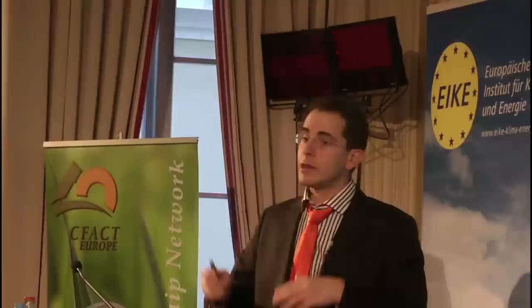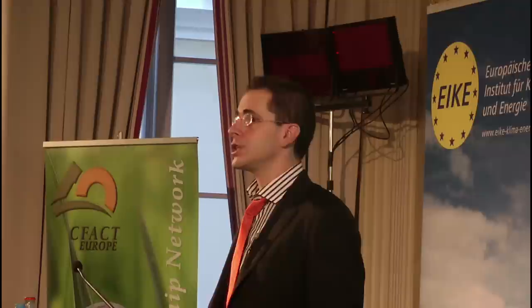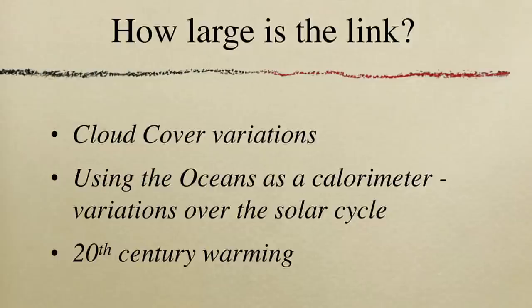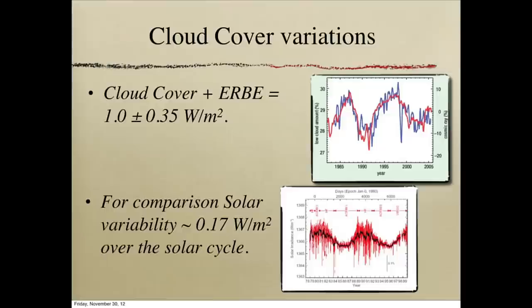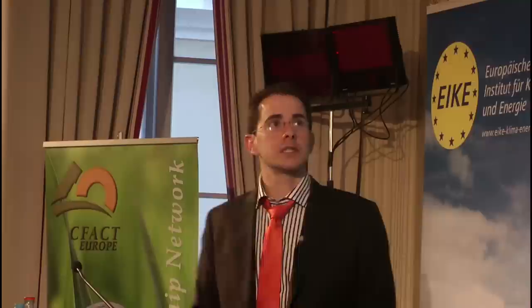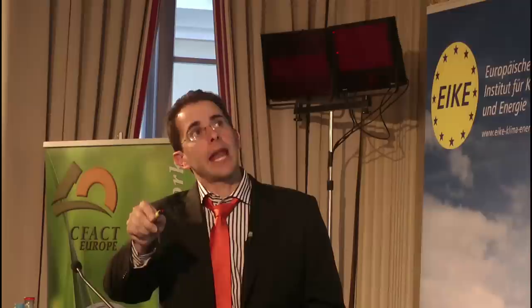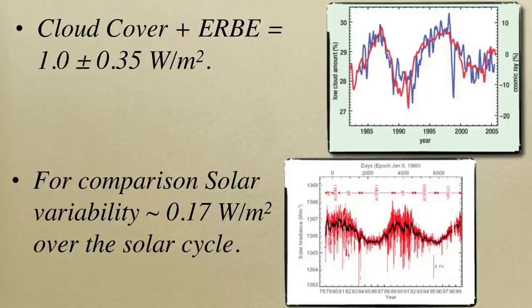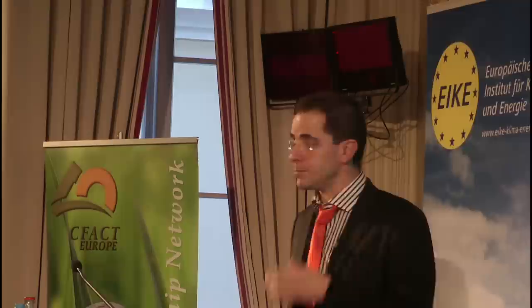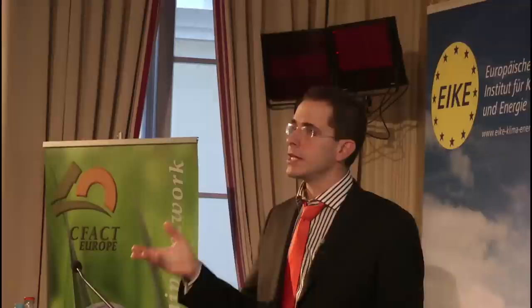We've seen that there is a large link — the sun affects the climate. Now comes the question: how large is this link, and can it be important for climate change over the 20th century? If you look at changes in solar irradiance, you get variations of about 0.17 watts per square meter, compared to an average of 240. But if you look at the change in cloud cover over the 11-year solar cycle and use satellite measurements to translate that into a change in the energy budget, the cloud cover change corresponds to about one watt per square meter — much larger than the change in solar irradiance alone.